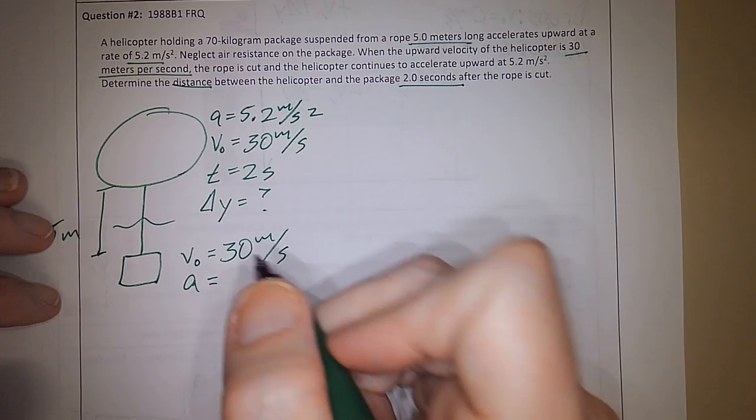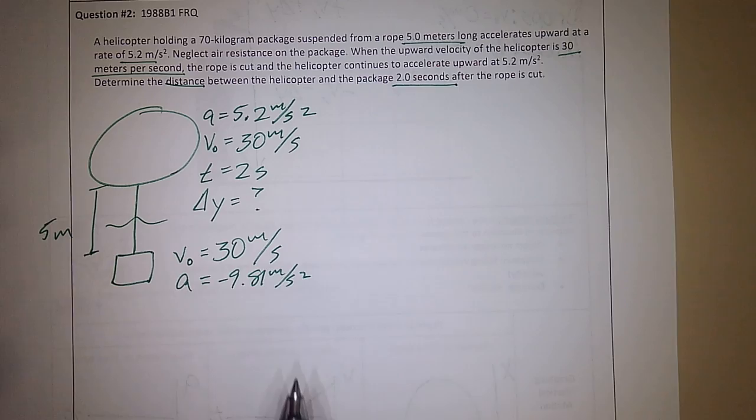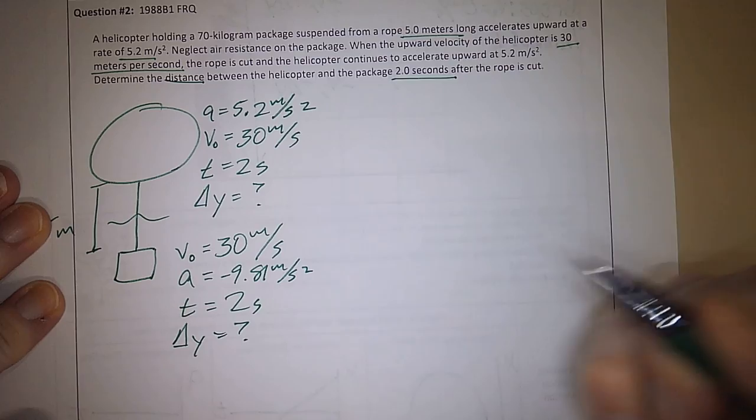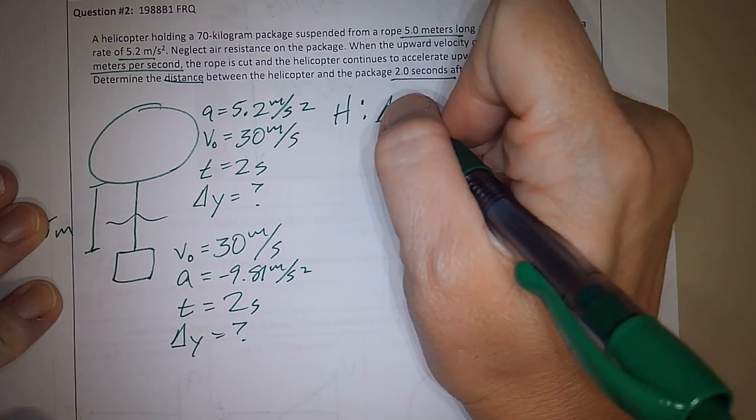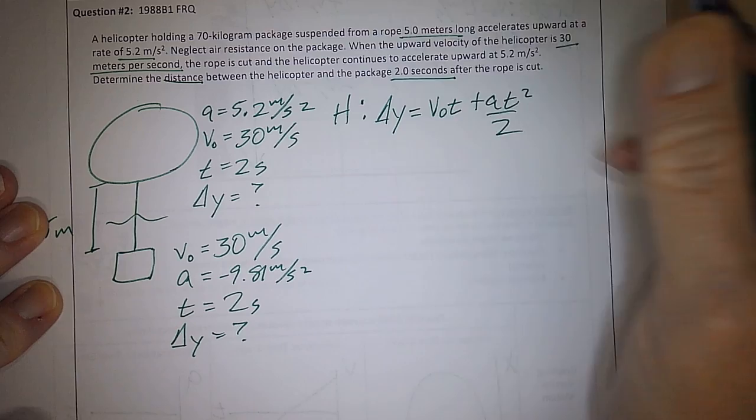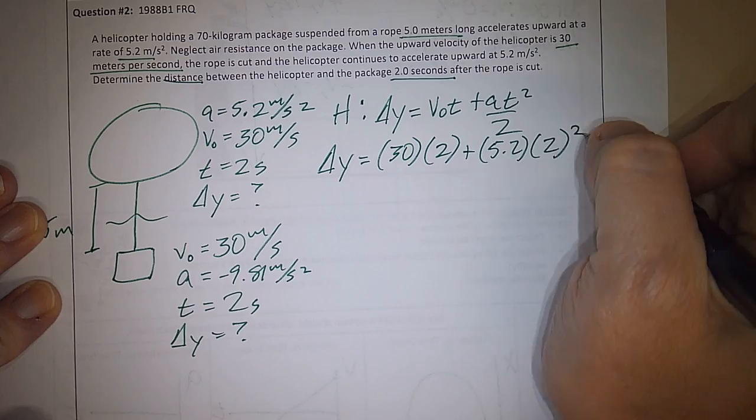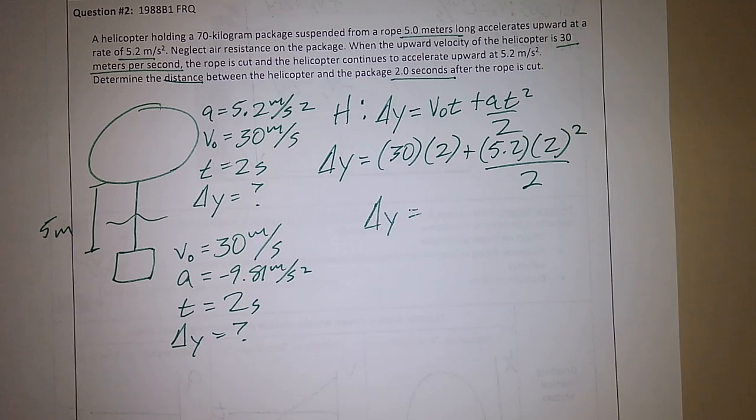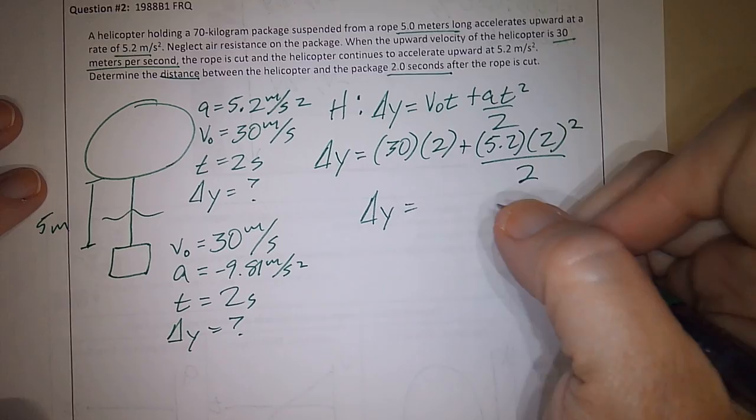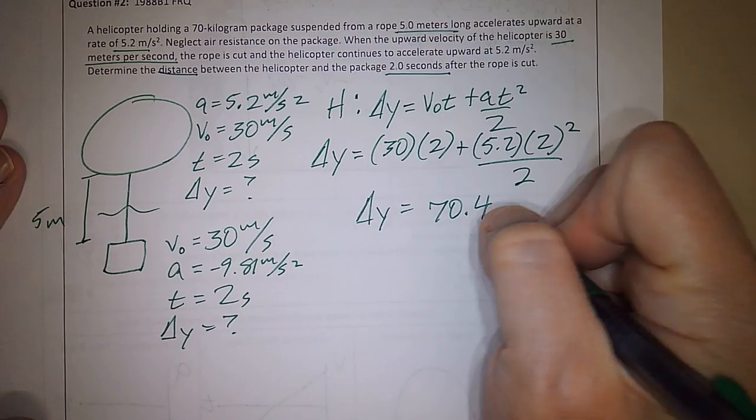My V initial is still positive 30 meters per second. But now, what's my acceleration on the box if it's no longer attached to the helicopter? Negative 9.81. And so my time is 2 seconds, I'm looking for my delta Y. So helicopter is delta Y equals V naught T plus AT squared over 2. So let's plug that in. I think you get 70.4 meters.